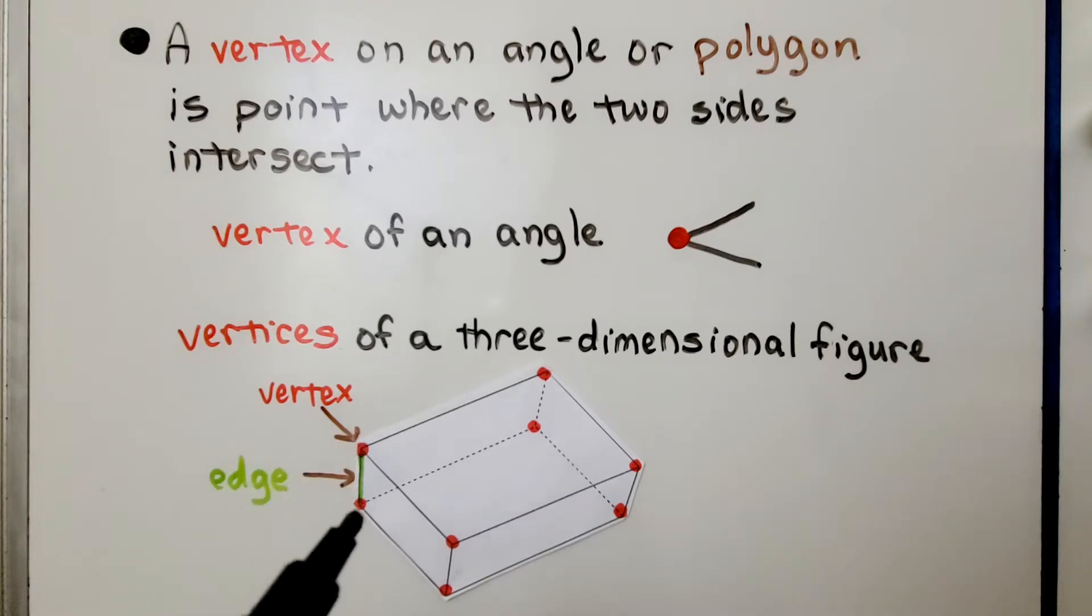Here's a vertex. All the red dots are vertices of this rectangular prism. This line right here is an edge.